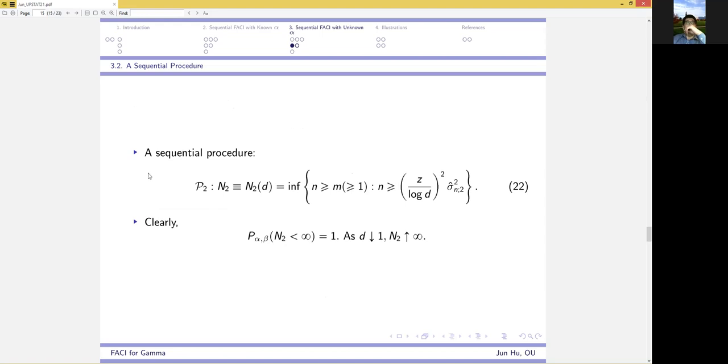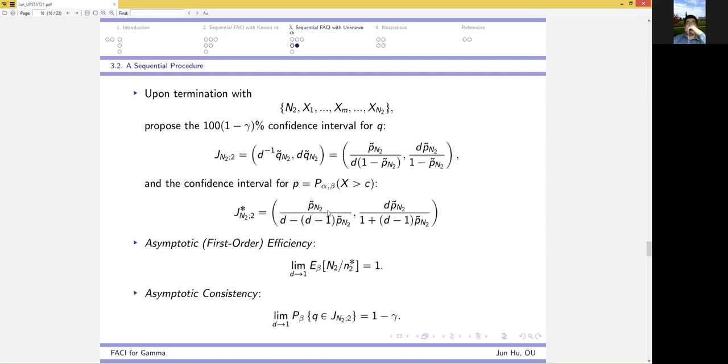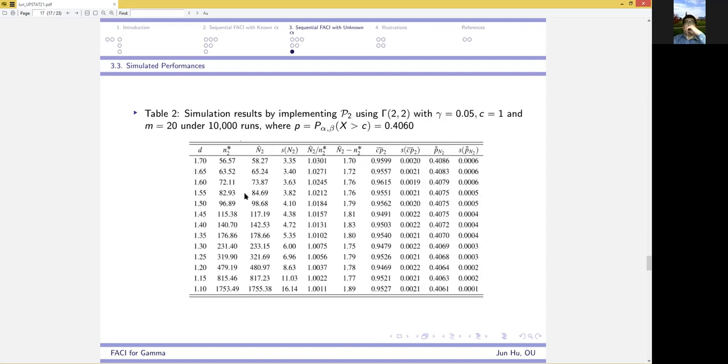Next, we propose the sequential procedure in a similar way, which terminates with probability 1 as well. Now, upon termination, we can construct the confidence intervals for q and for p, respectively. And our procedure P2 also enjoys asymptotic efficiency and asymptotic consistency. And these are verified by simulation results given here.